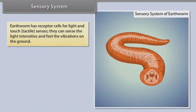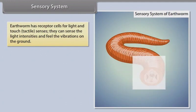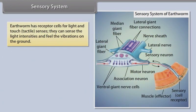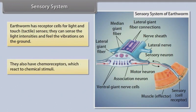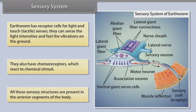Earthworm has receptor cells for light and touch (tactile senses). They can sense light intensities and feel vibrations on the ground. They also have chemoreceptors which react to chemical stimuli. All these sensory structures are present in the anterior segments of the body.